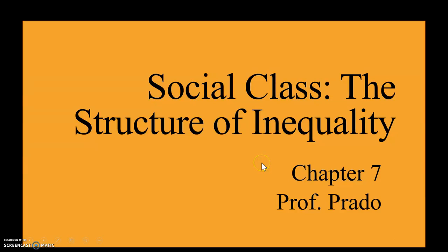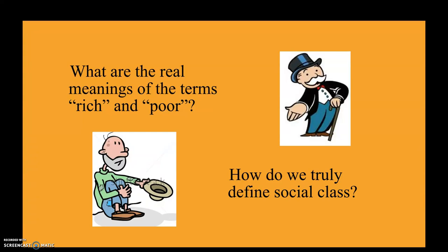Hi class, today we'll look at chapter 7, Social Class of Structure and Equality. The title itself suggesting heavy emphasis from conflict theory. Think about what it means to be rich and poor to you. We tend to have these drastic ideas, a dichotomy of poor and rich, but when it comes to social class, it tends to be so subjective, it's so hard to really determine where poverty starts, where middle class blurs. So think about it — what is your own definition of social class?